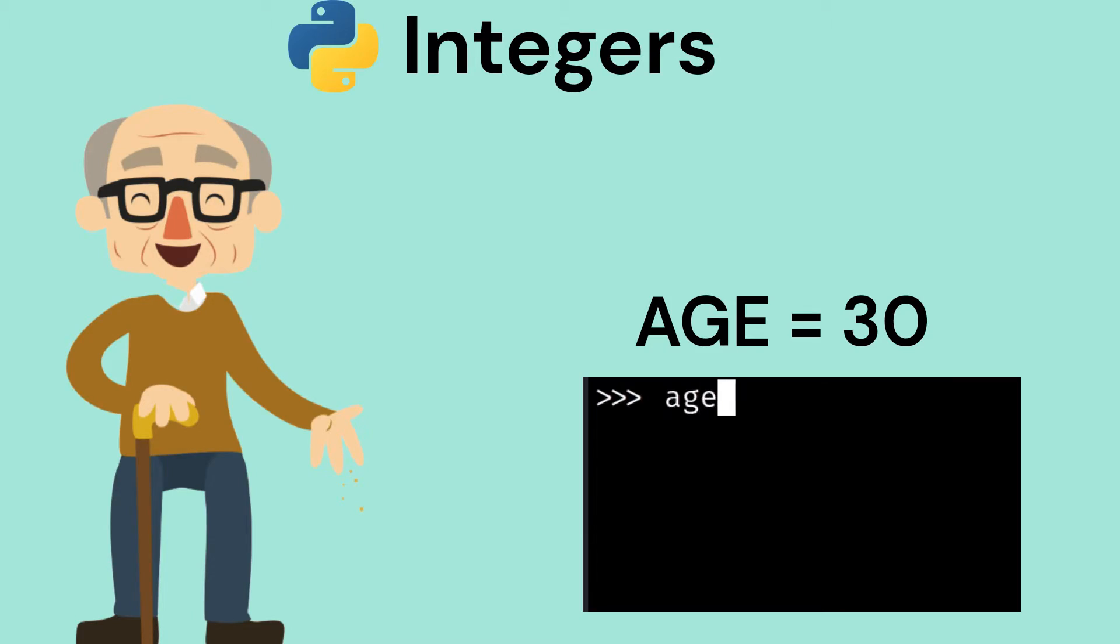For integers, let's say we want to store someone's age. We can do this by creating variables of data type int, for example, age equals 30.